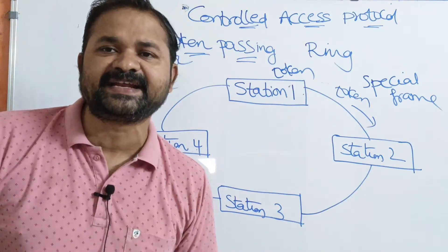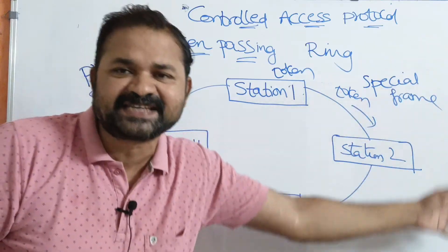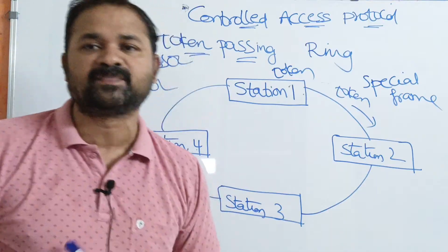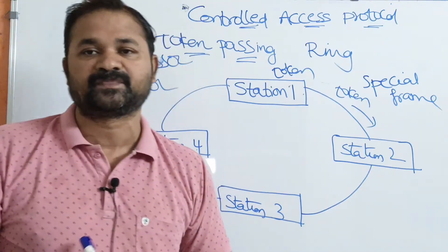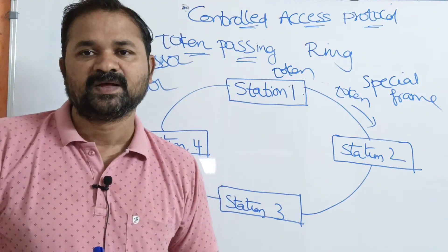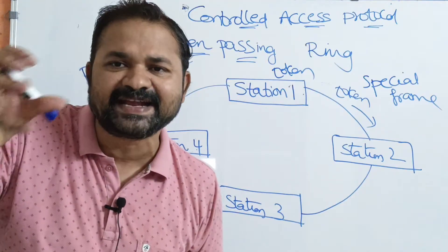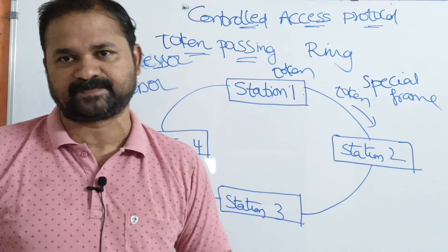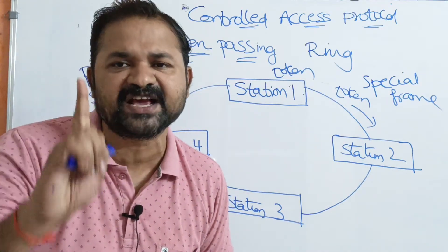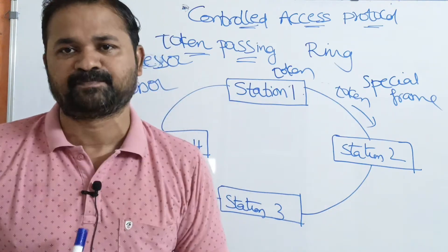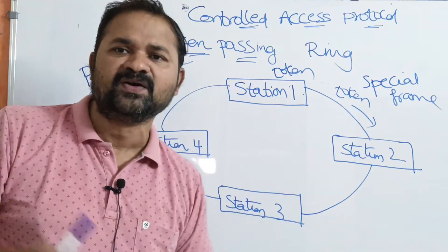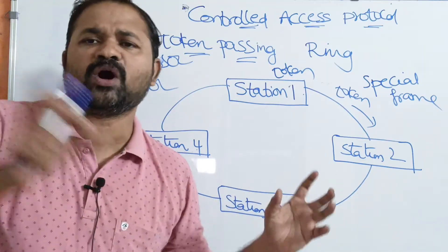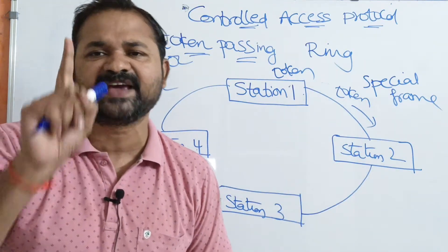After sending the data, station 2 forwards the token to its successor. With the help of the token, we are avoiding the collision. We know why we get collision — when multiple stations try to send data simultaneously, we get collision. But here no such problem occurs, because at a time only one station can send the data. We have only one token. Station 4 can send the data only if it has the token, and while station 4 is sending, no other station is allowed to send data.